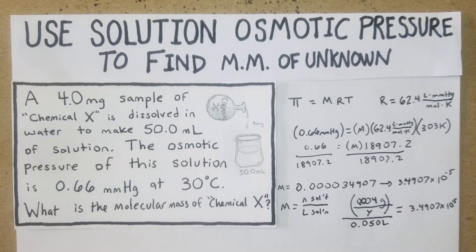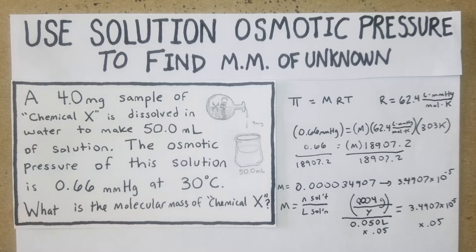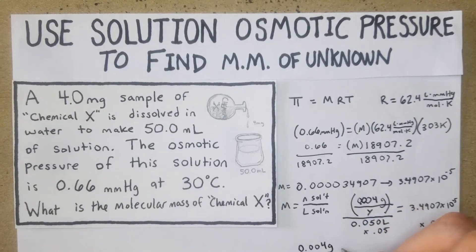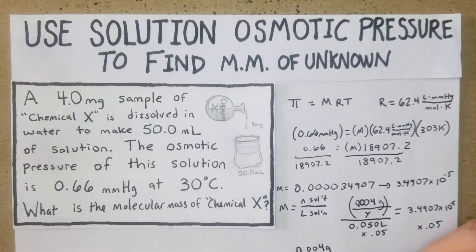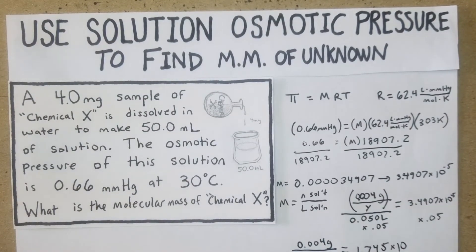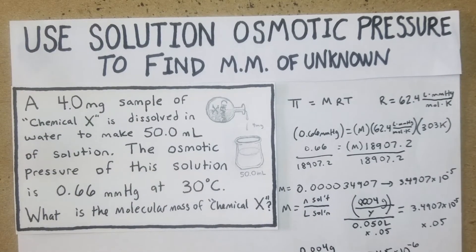This is all going to be equal to our 3.4907 times 10 to the negative fifth. First off, we can multiply both sides by 0.05. So now multiply that by 0.05 and now we get 0.004 grams over y equals 1.745 times 10 to the negative 6.